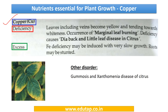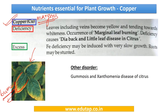Moving on to copper: the leaves including the veins become yellow, tending towards whiteness — basically the margins become yellow, there is burning of the margin. It is very important to remember that the margins show yellowing, in a way burning. There is a very important disease — die-back and little leaf disease — caused in citrus. There are other disorders as well: gummosis and xanthomania. These disorders you also need to remember.